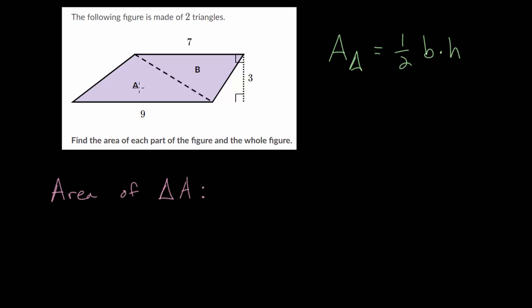With this area, it looks like it has a base of nine and a height of three. So it would be one half the base, which is nine, multiplied by the height, which is three. And nine times three, that's 27. So we have 27 divided by two.